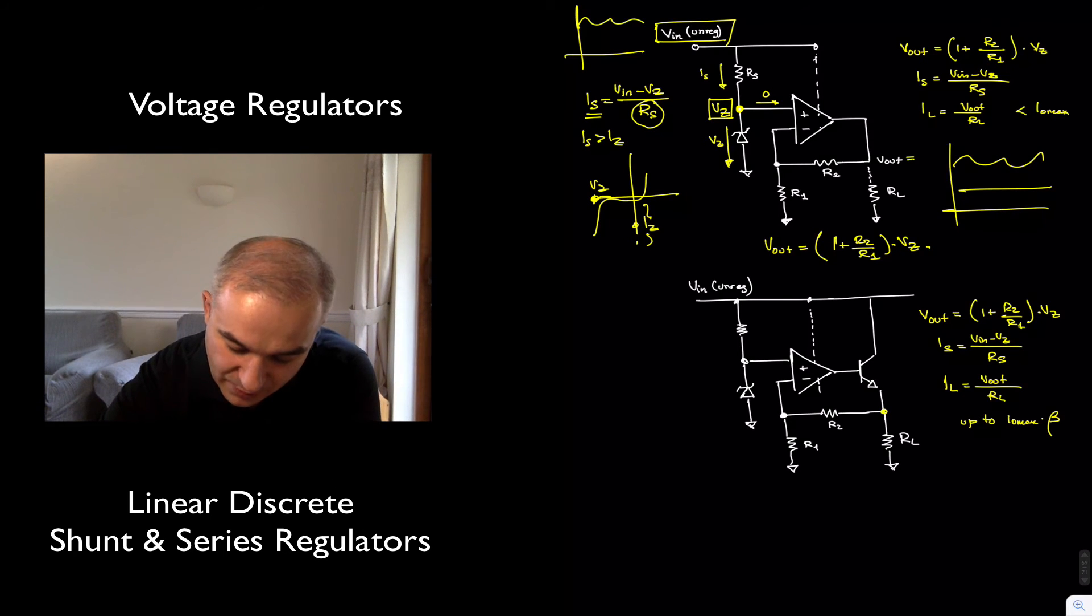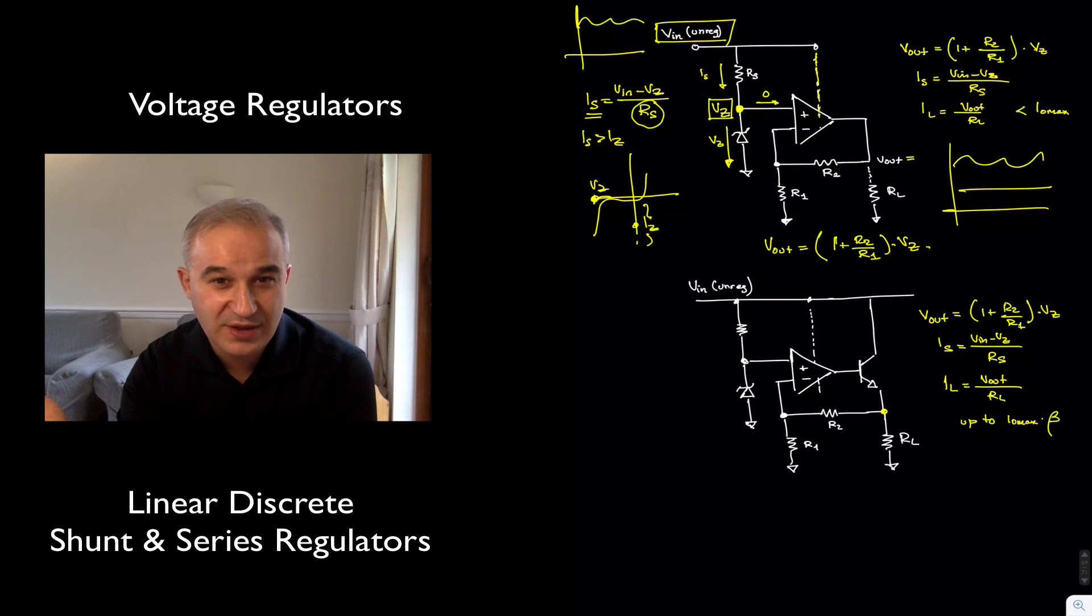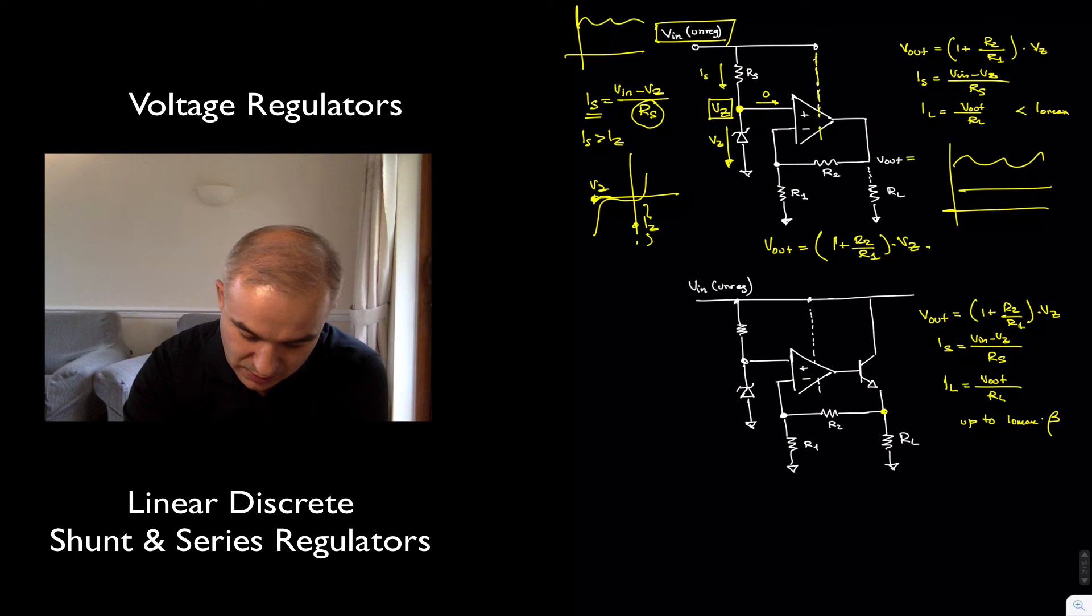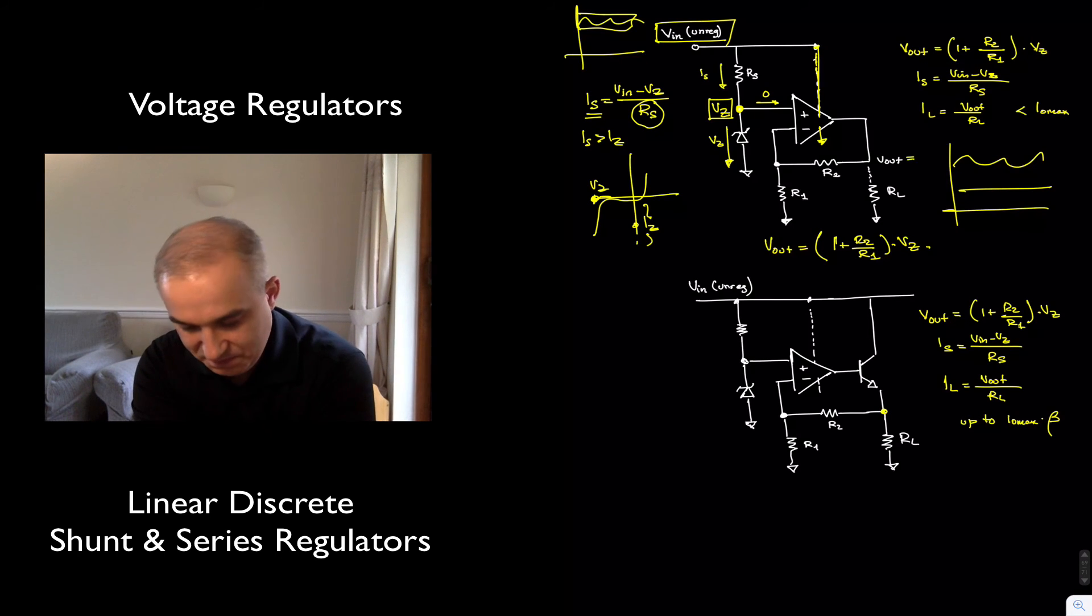Now, this operational amplifier we can power through the unregulated supply because they have a high power supply rejection ratio. We will want an operational amplifier that you can just power with a single supply, and that it deals well with unregulated supply. And here we connect the load.